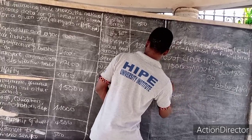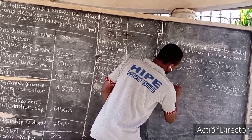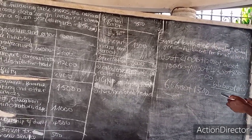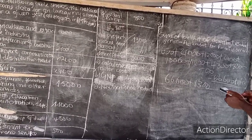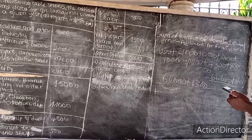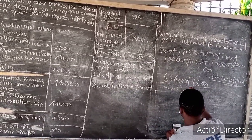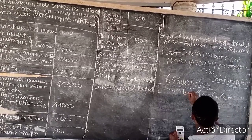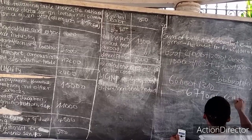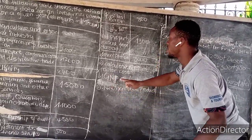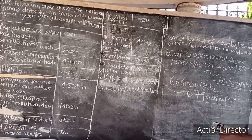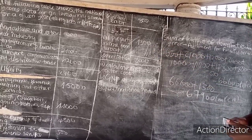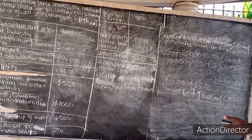So we take 66,600 million plus the net property income from abroad of 1,300. Adding those two gives a total sum of 67,900 million francs CFA. That is the gross national product at factor cost.